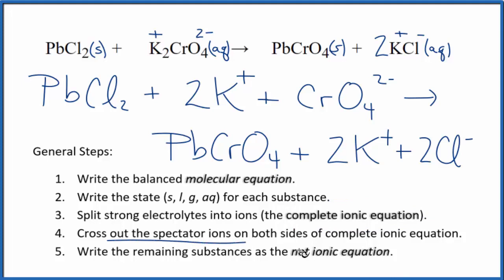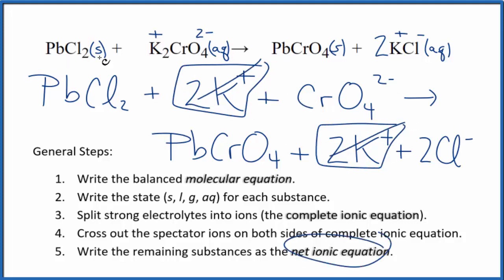Now we can cross the spectator ions out on both sides. So the only thing I see that's the same in the reactants and the products is the potassium ion right here, again in the products. Let's get rid of that. And this is the net ionic equation for PbCl2 plus K2CrO4.